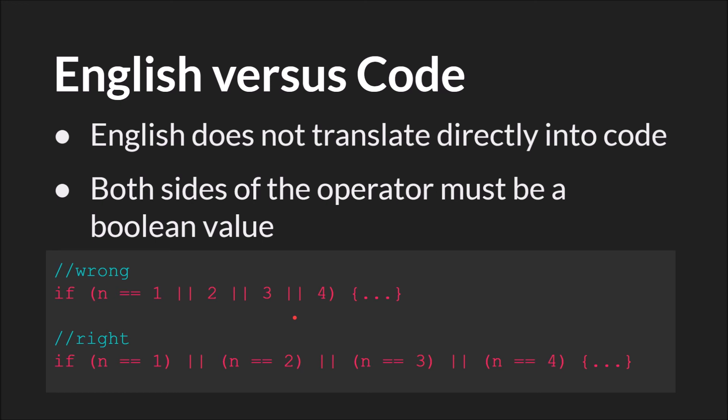If you want to say that same thing in code, you have to break it apart. You have to say if n equals one or n equals two or n equals three or n equals four. Both sides of the operator must be a Boolean value. I've taken both of these examples from another very helpful tutorial on the GMC forums, and I've linked to that tutorial at the end.